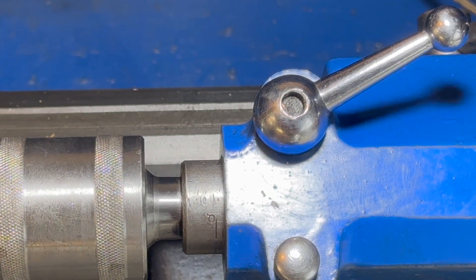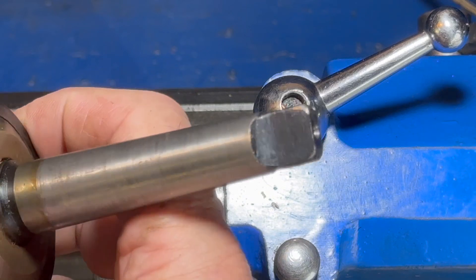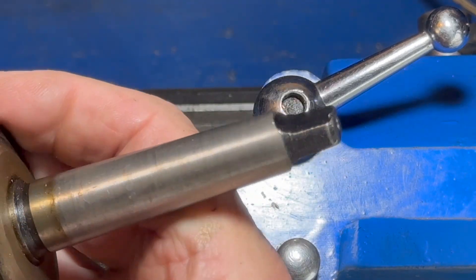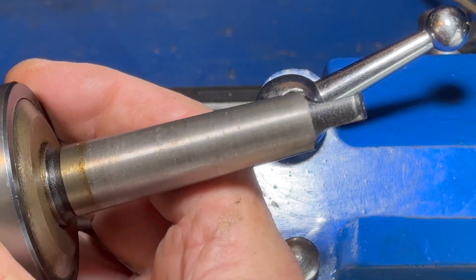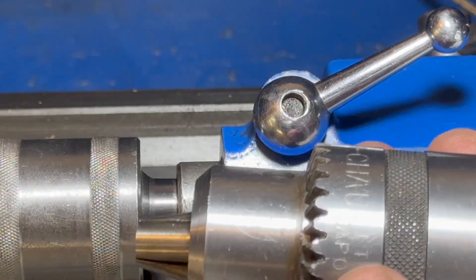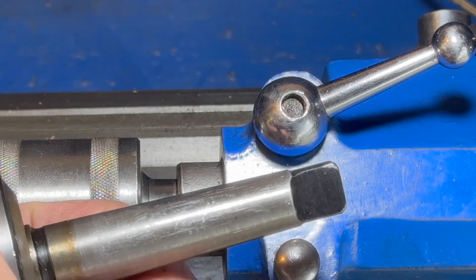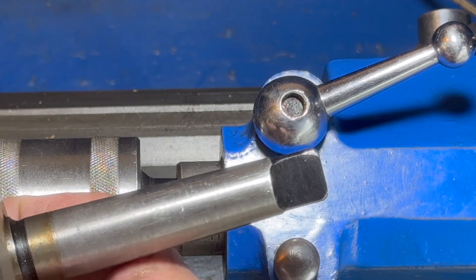In order to correct the Jacobs chuck, I need to grind a little bit off the tang at the end. Now I read that tang is used to stop the drill from spinning around, but that only applies when it's used in a drill stand. It does not apply to the tailstock on the lathe, so I'm not going to do any harm by taking a little bit off.